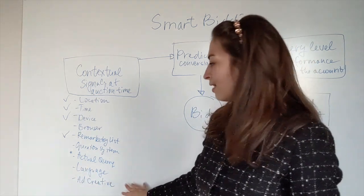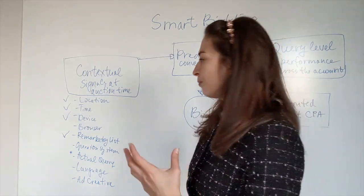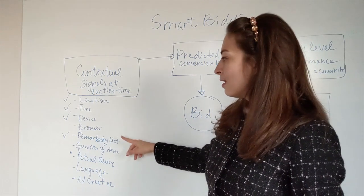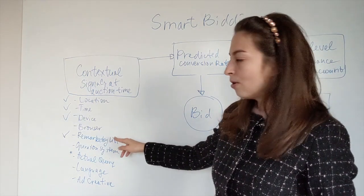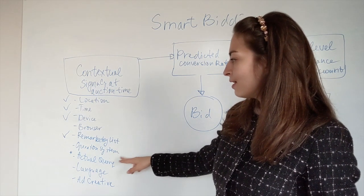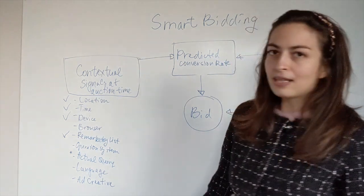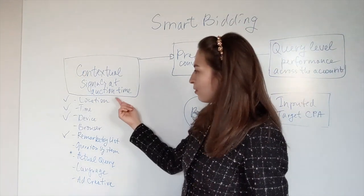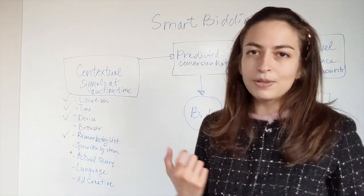Smart bidding will automatically pick up location, time, device, browser (which is not possible if you're doing adjustments on your own), remarketing list, operating system, the actual query, language, and ad creative.